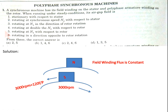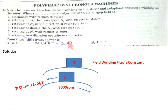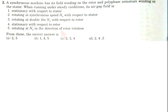Statement 5: air gap field rotating at NS with respect to rotor — that is wrong, we have seen it is at double speed. Statement 6: air gap field rotating in the opposite direction of rotation — from the diagram, the air gap field is rotating opposite to the rotor direction, so statement 6 is correct. Therefore statements 1, 4, and 6 are correct, and option B is the correct answer.